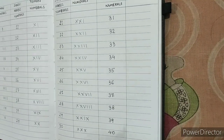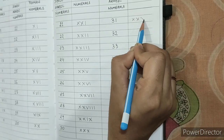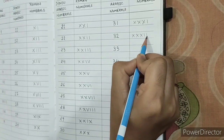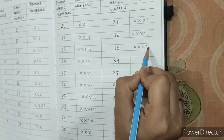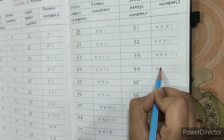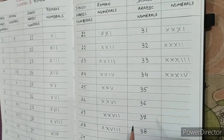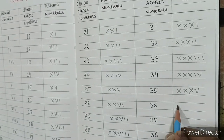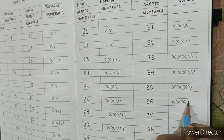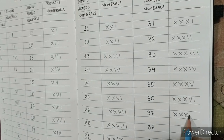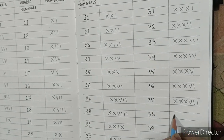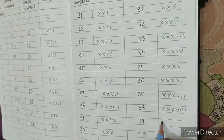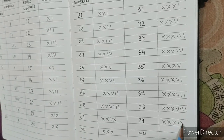For 30 we write XXX. So 31 is XXXI, 32 is XXXII, 33 is XXXIII, 34 is XXXIV, 35 is XXXV, 36 is XXXVI, 37 is XXXVII, 38 is XXXVIII, and 39 is XXXIX.